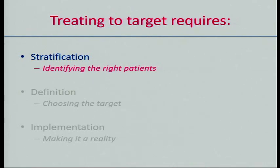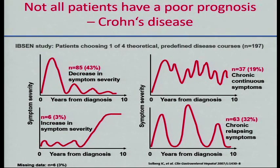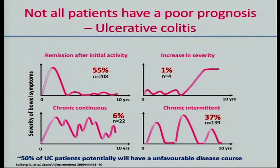When identifying the right patients, we need to understand that not all patients are the same. Some patients don't actually have a bad disease prognosis. Looking at the IBSOM cohort for Crohn's disease, patients were asked which picture best describes their disease activity — whether they start with a flare and do well, have intermittently active disease, or ongoing active disease. Only about half really have the more worrying phenotypes of continuously active, intermittently active, or late active disease. About half have a relatively benign phenotype. This goes for both Crohn's disease and ulcerative colitis.